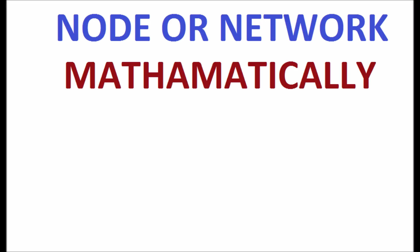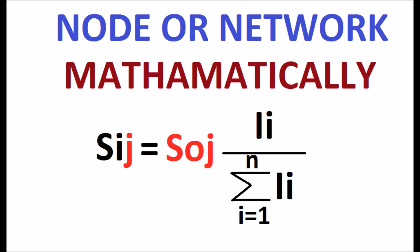is the same. Mathematically, the share of Ith source to the Jth load, SIJ, is equal to Jth load power SOJ multiplied with the ratio of Ith source current II to the total of source currents, sigma of I1 to N,